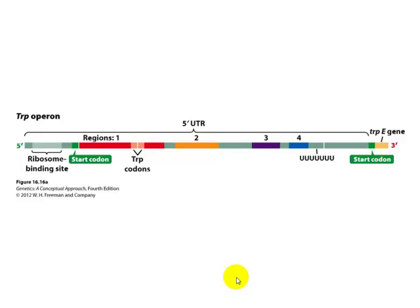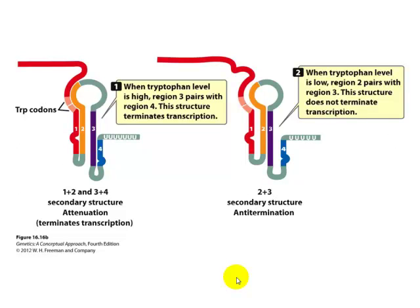What happens then is that a loop forms between regions 2 and 3. Regions 1 and 2 can pair together, and regions 3 and 4 can pair together — and 2 and 3 are complementary. You can form a loop of RNA interaction once transcription of region 1 and 2 occurs, and you can also form another loop of region 3 and 4. Alternatively, you can form a 2-and-3 loop. So you either have two hairpins (1-2 and 3-4) or one hairpin (2-3).